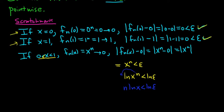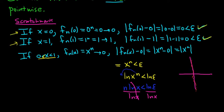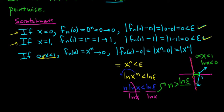When we divide by ln(x), we note two things: x is not 1, so we're not dividing by 0. Also, since x is strictly between 0 and 1, the natural log of x is negative — it lies in the region left of 1 on the log graph where the function is negative. So when we divide by ln(x), we must reverse the inequality, giving us n > ln(epsilon) / ln(x).